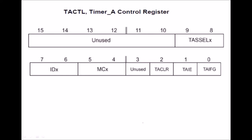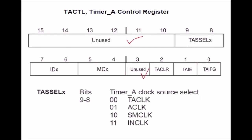The first register is the Timer A control register, TACTL. In this register, some bits are unused, including bit number 3. The TASSELX bits — 2 bits — are the Timer A clock source select. There are 4 clock sources. If these bits are 00, then TACLK clock is selected. If 01, then auxiliary clock is selected. If 10, then sub-master clock (SMCLK) is selected. And if 11, then internal clock (INCLK) is selected. These bits are used to select the clock signal.